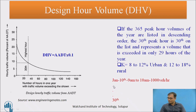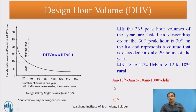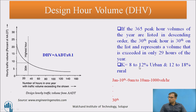If we take the 100th hourly volume, it is lower and would result in more congestion at that location. The K value typically used is 8 to 12 percent for urban locations and 12 to 18 percent for rural sections. This is the principle behind using the 30th highest hourly volume as the design hourly volume.